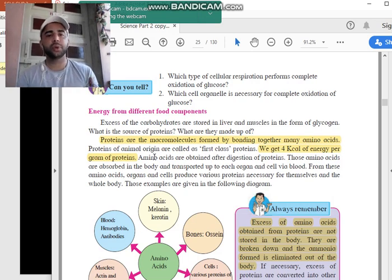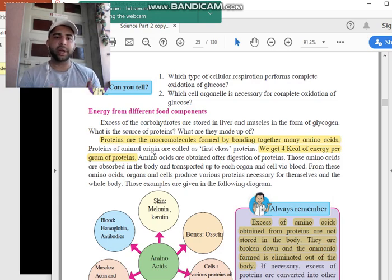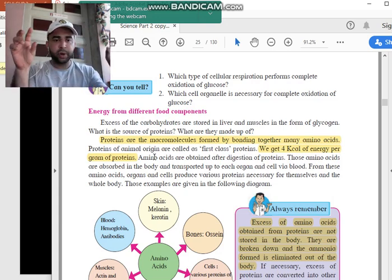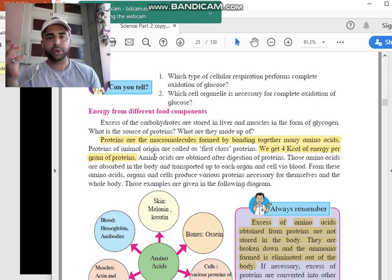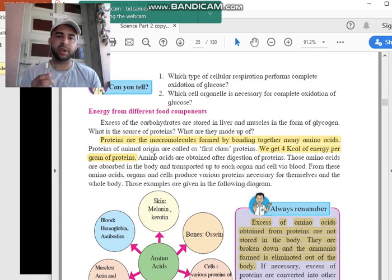See what happens is you eat proteins. You get proteins from plant source or maybe from animal source. When you eat it, again proteins are made up of amino acids. When this protein gets inside your body, inside your stomach, they break into small amino acids.